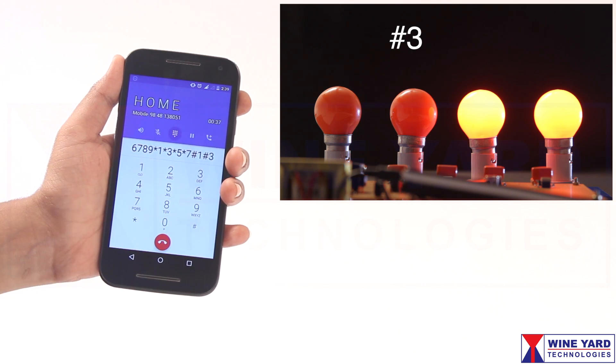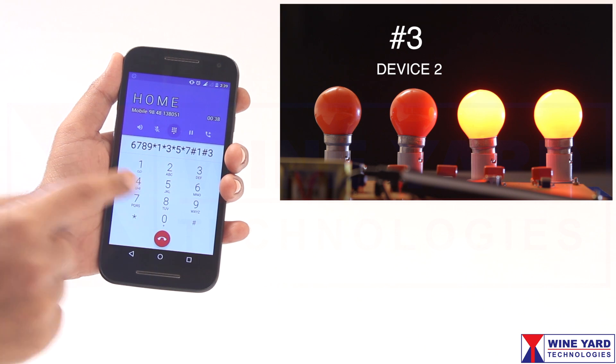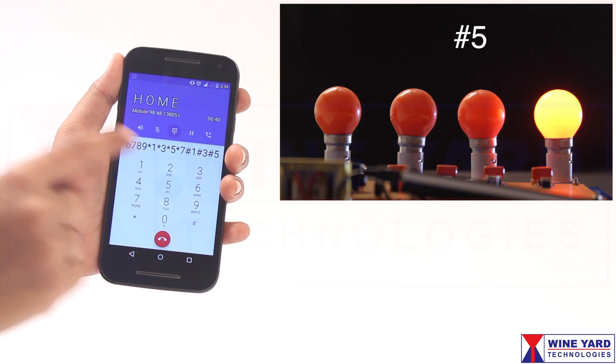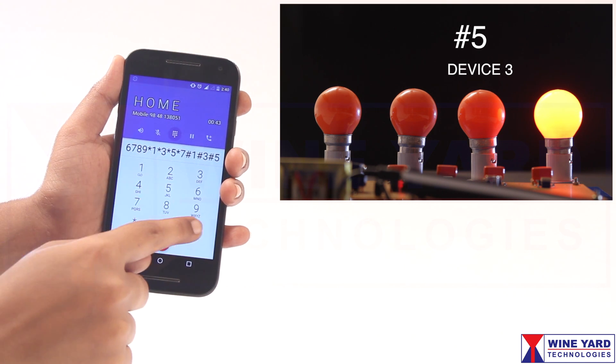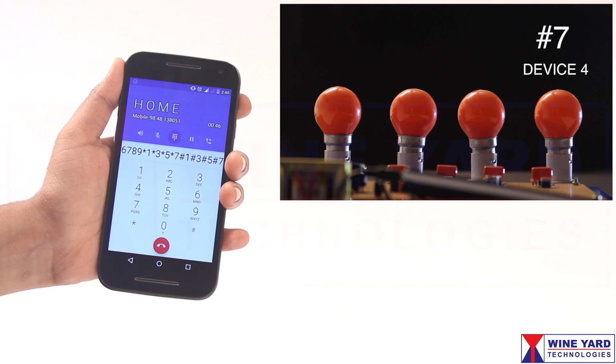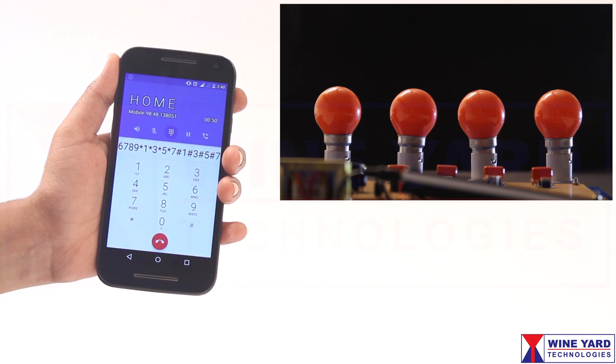Now enter #3 to make the 2nd device OFF. Same like that, enter #5 to make the 3rd device OFF. Again enter #7 to make the 4th device OFF. Now you can check all the 4 devices are in OFF state.